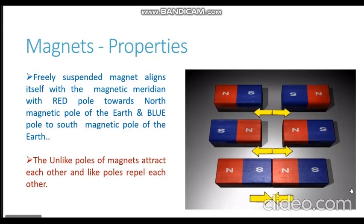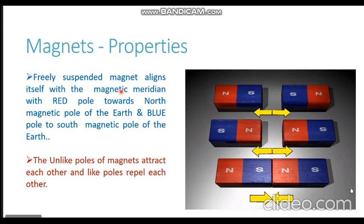Magnets show two distinct properties. The first property: a freely suspended magnet aligns itself with the magnetic meridian, with the red pole of that magnet pointing towards the north magnetic pole of the earth. In other words, a freely suspended magnet aligns itself towards magnetic north and south — red end points towards magnetic north and blue end points towards magnetic south.